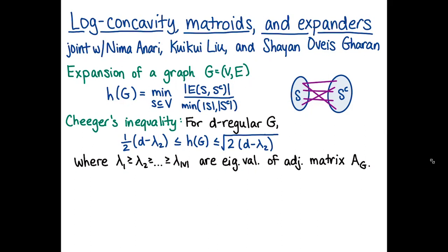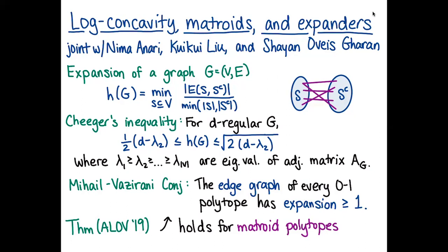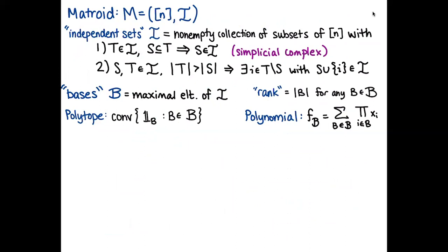A classical inequality for expansion is Cheeger's inequality, which bounds expansion in terms of the second eigenvalue of the adjacency matrix of a d-regular graph. This will very much be a story about second eigenvalues. In the late 80s, Mihaly and Vazirani conjectured that the edge graph of every 0-1 polytope has expansion at least one. One consequence of what I'll discuss today is that this holds for matroid polytopes, which are very special types of 0-1 polytopes.